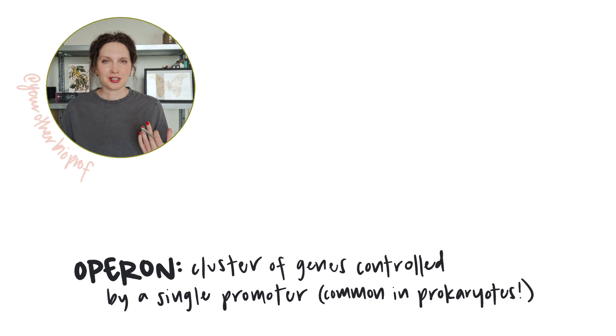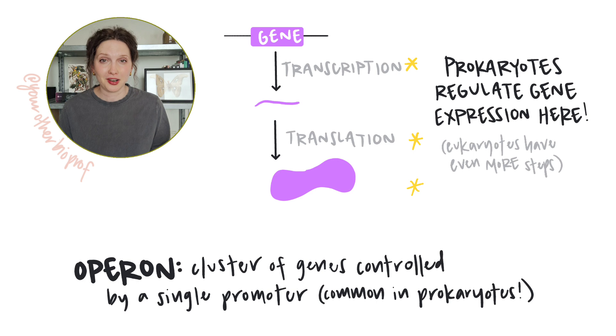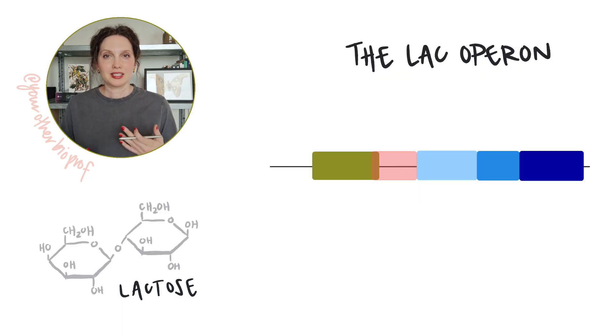An operon is a way to organize genes whose products function in the same pathway by putting those genes together under the control of a single promoter. Operons are a great example of how gene expression, that multi-step process of going from gene to a functional product, can be regulated at the level of transcription. The lactose operon, or lac operon in E. coli, contains genes necessary for the metabolism of the sugar lactose.